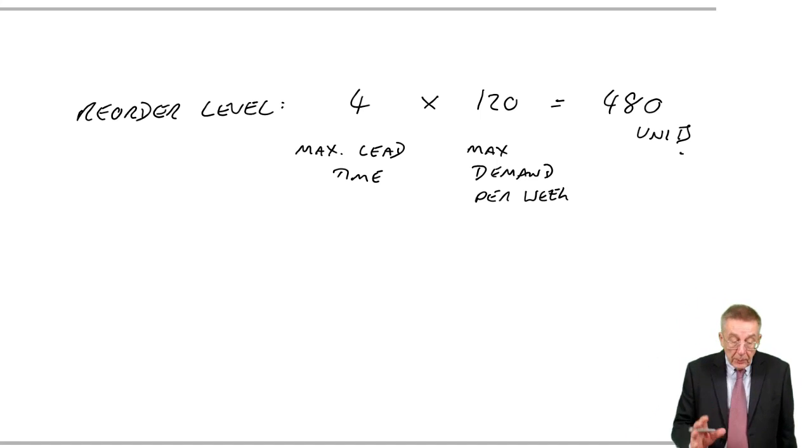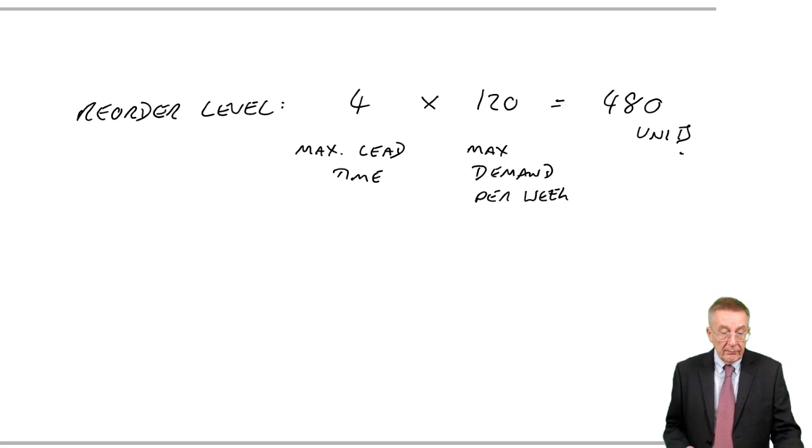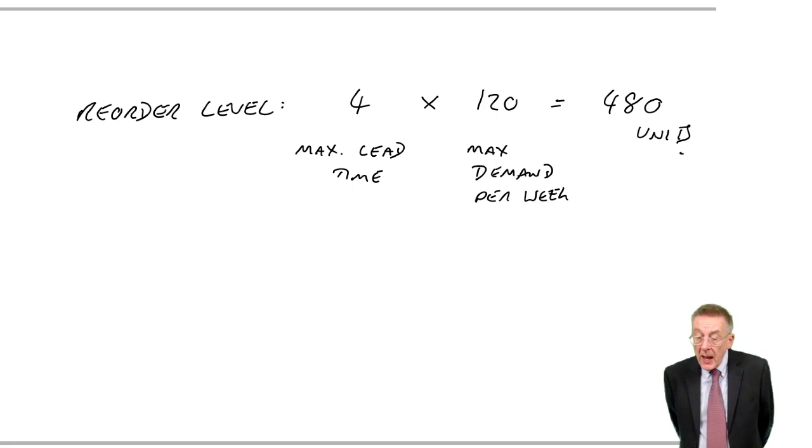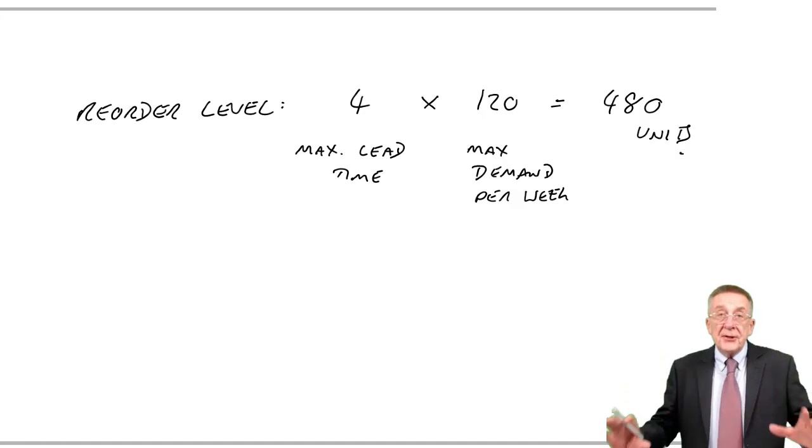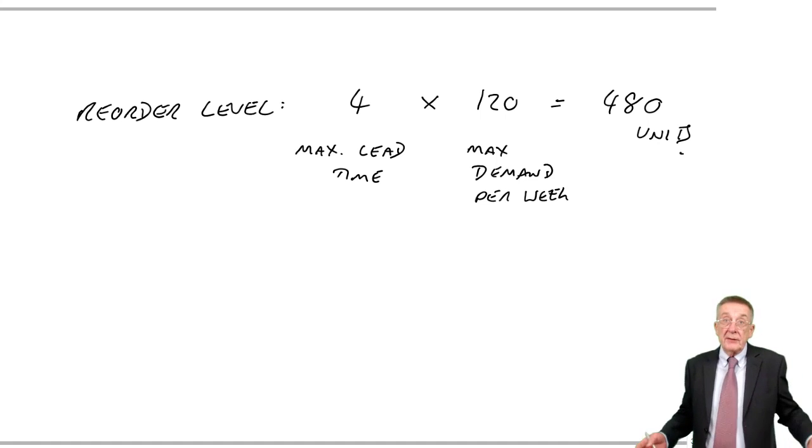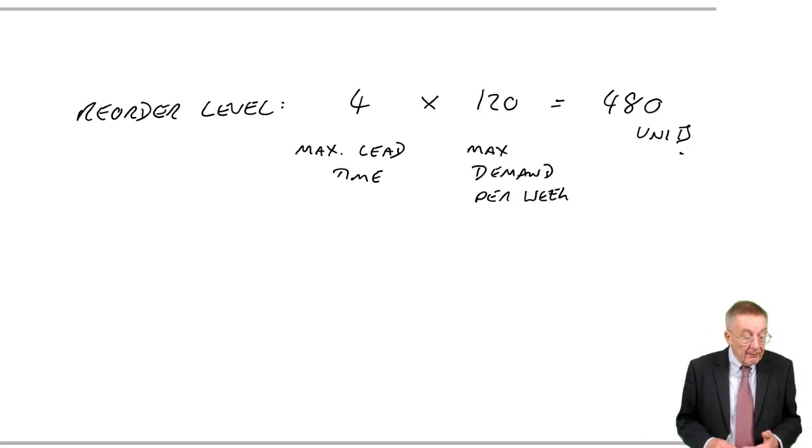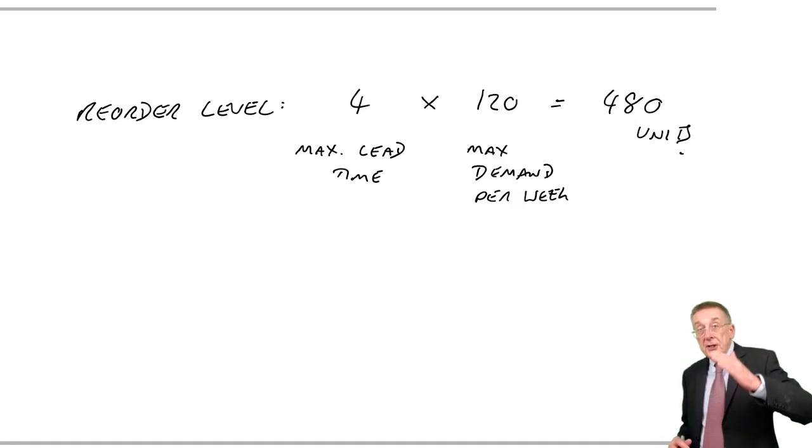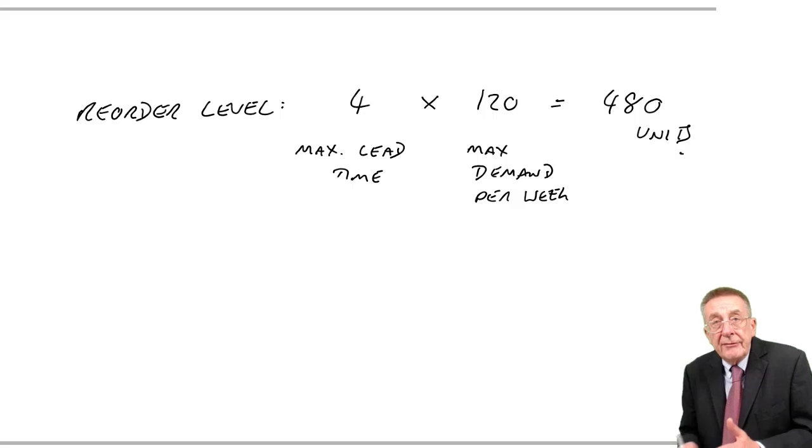So again, arithmetically obviously very easy, but I hope it's making sense. Just one more thing though. Although that's the worst that could happen, four week lead time and a demand of 120 a week, and therefore 480 units on the reorder makes it certain we'll never run out, there'll be plenty of times when the lead time will be low. The lead time might only be three weeks. So although I ordered when I had 480 left, we wouldn't actually need them all. And equally, the demand per week, the worst can happen is 120, but some weeks it might only be 70. And so there will be times when we've placed an order when we had 480 left, but didn't need to use them all, so there were still some left when the new order arrived.